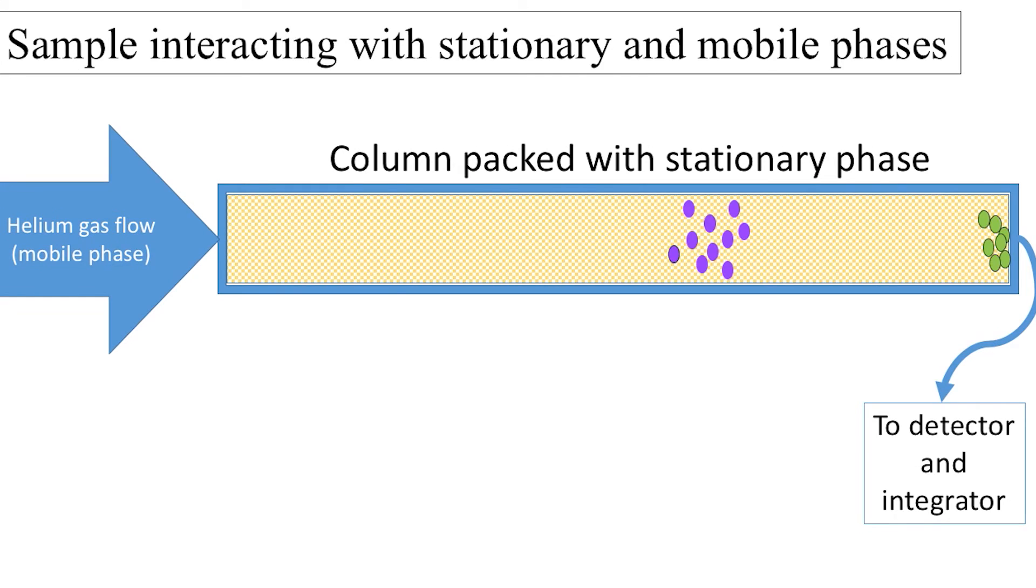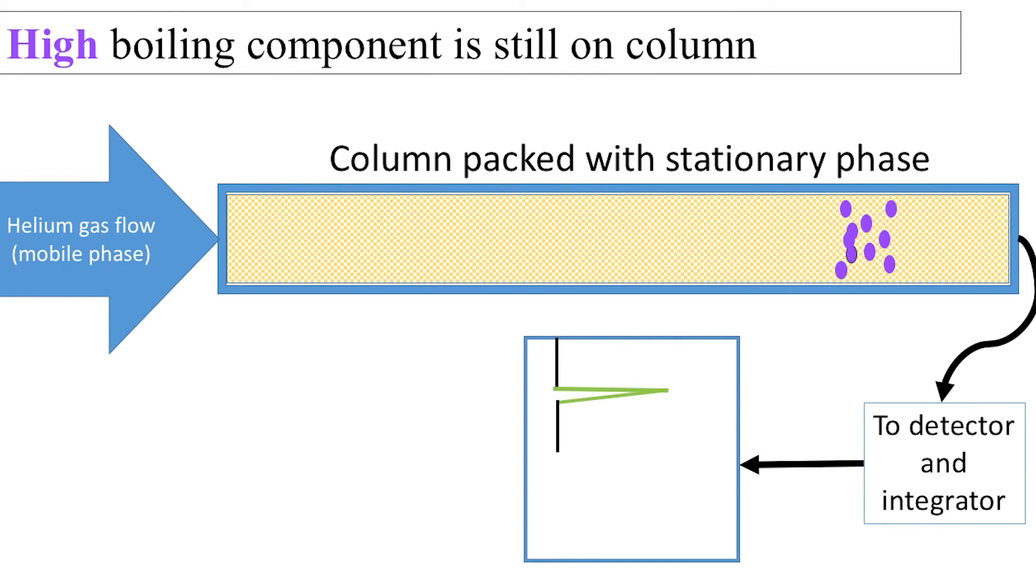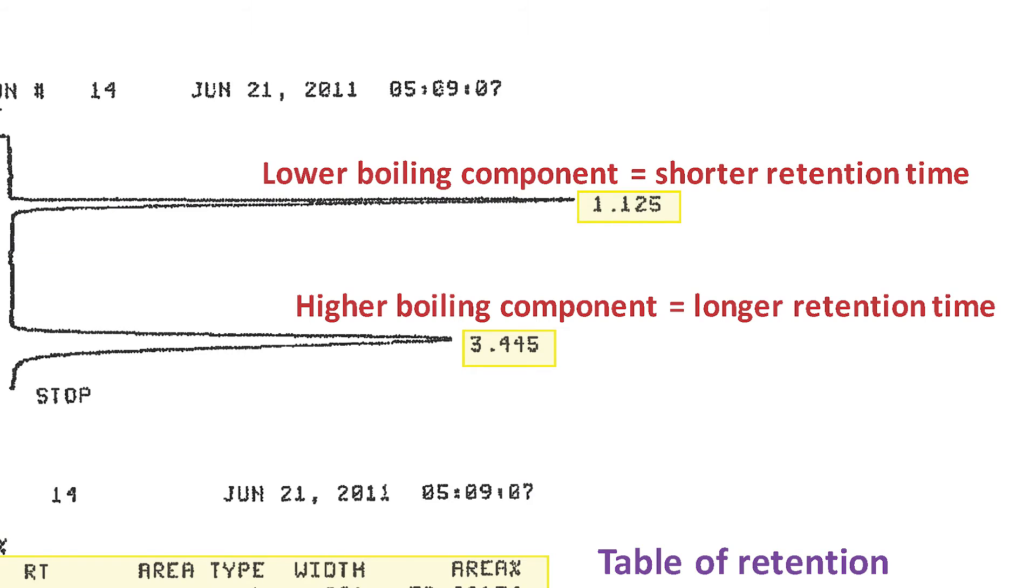These compounds will get to the detector first and produce some of the first peaks on the integrator, each peak labeled with the specific time it stayed in the machine. This is called the retention time.